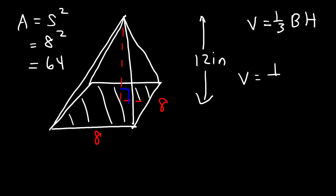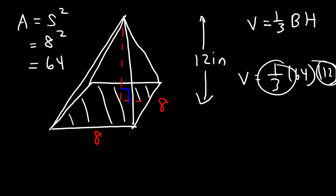The volume of the pyramid is 1/3 times the area of the base, which is 64, times the height of the pyramid, which is 12. Now 1/3 of 12 is 4.